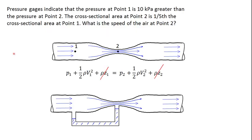Let's demonstrate the use of this equation by working a quick example problem in which the pressure is measured at point one and point two. And the pressure at point one is ten kilopascal greater than the pressure at point two. And we want to know what the speed is at point two if the cross sectional area at this point is one fifth the cross sectional area at point one.